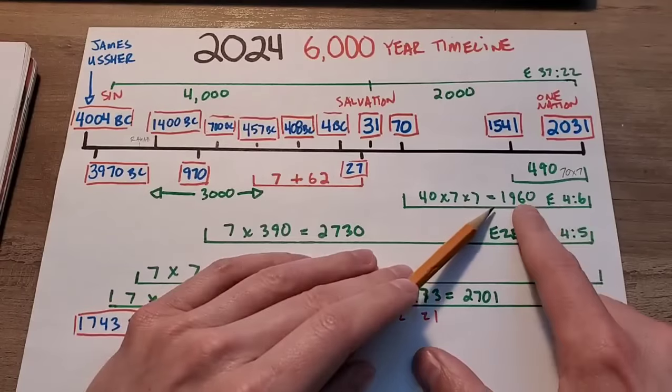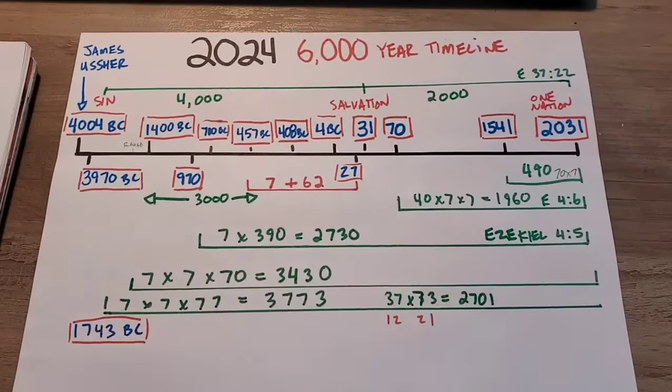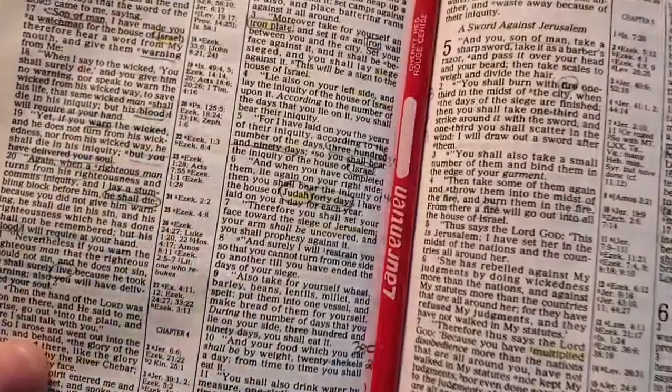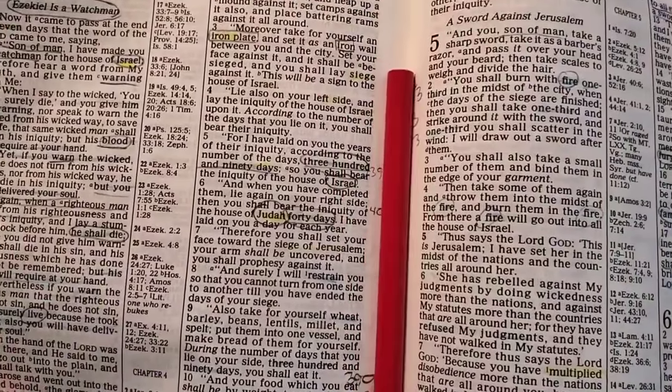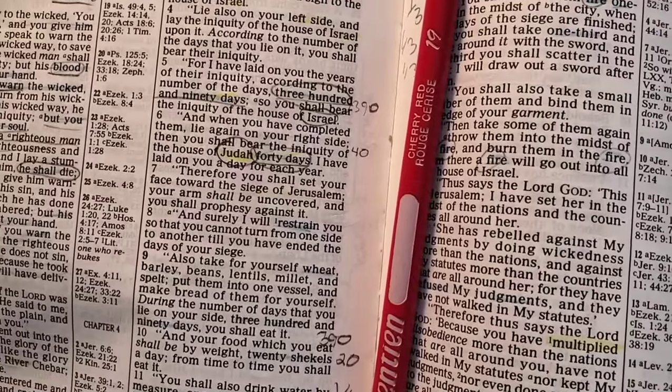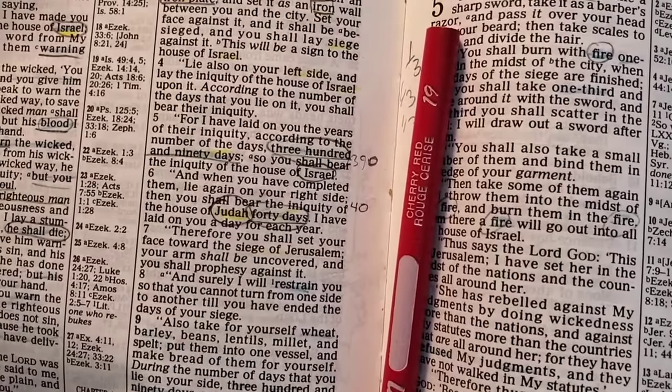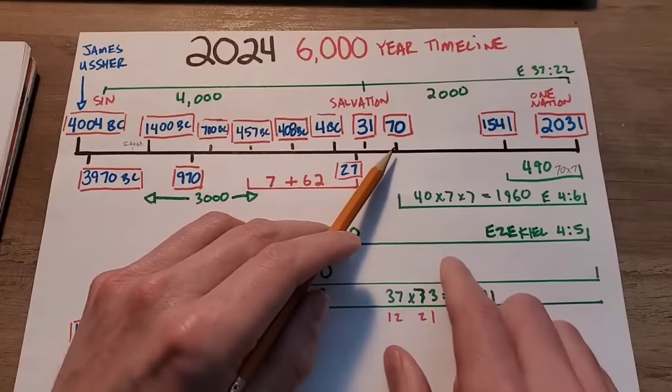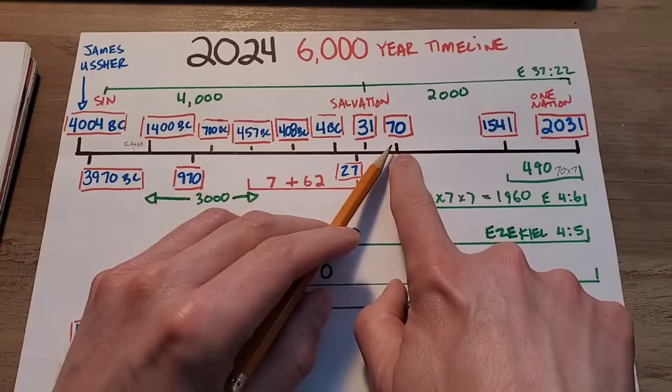So remember that prophecy that we talked about last year, points to 2030? If you don't count 70 as one, but you count 71 as one, well, then that whole thing still fits. I'm talking about inclusive versus exclusive counting. So 40 times 7 times 7 is 1960, and there you go.